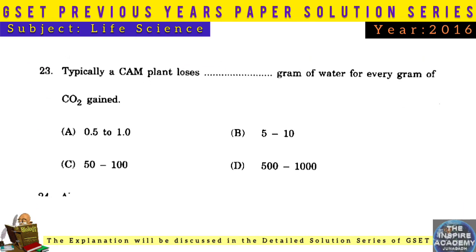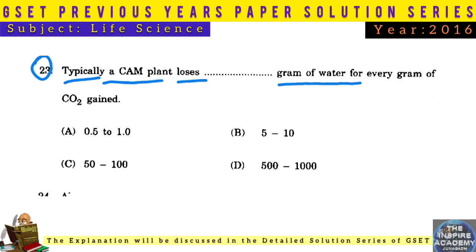Question No. 23: Typically, a CAM plant loses 50 grams of water for every gram of CO2 gained, compared to a C3 plant which loses 200 grams of water per gram of CO2 gained.